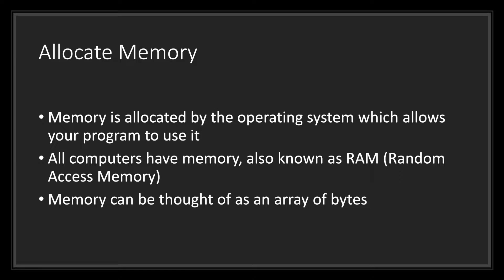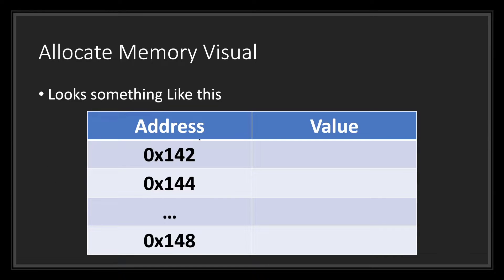Let's take a visual look at this. As you can see, on one side we have the memory address location and on the other we have values. This is what it looks like — you have addresses on one side and a value associated to that address on the other.